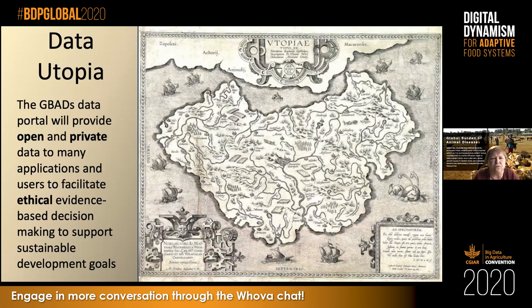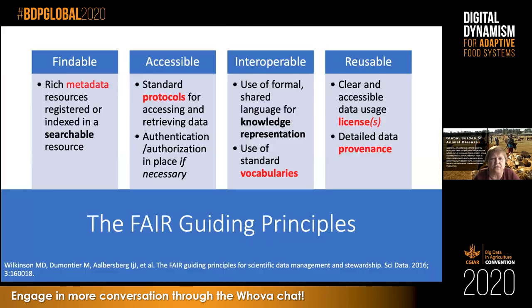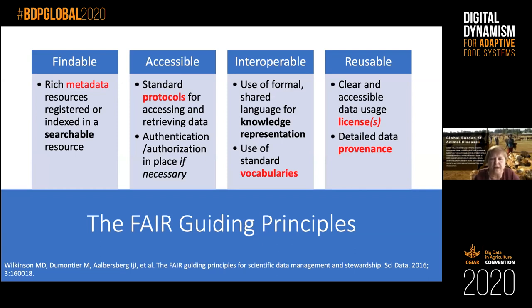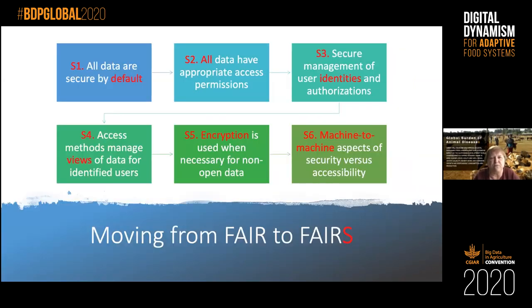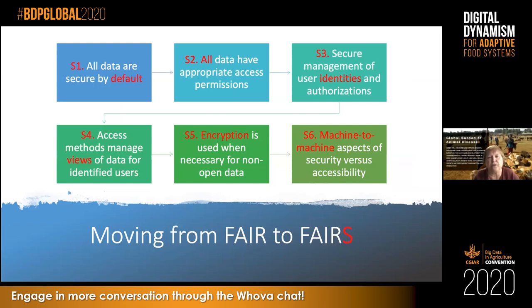We're designing our data portals and knowledge engines to be secure, trusted, and ethical by design. We'll follow the FAIR guiding principles — findability, accessibility, interoperability, and reusability — which rely on metadata, standard protocols, standard vocabularies, and provenance for data. We're also looking at moving from FAIR to FAIR-plus-Security. If we're going to incorporate private or non-open data, we have to have security designed in from the start. We have to be trusted brokers, ensuring the platform we provide for GBADS modelers is secure so people can trust us with their data, especially for machine-to-machine aspects of our work.